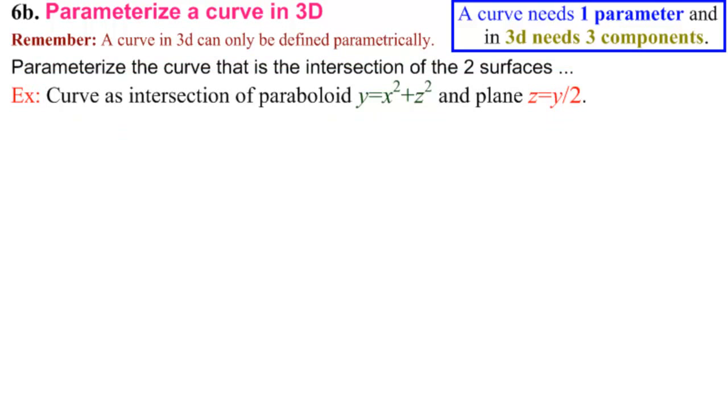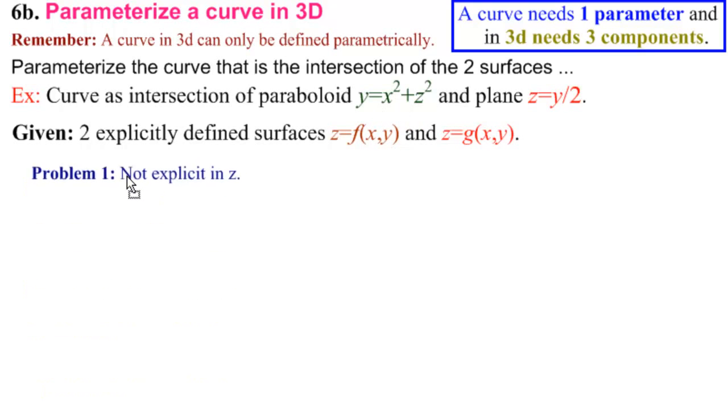And remember that our first thing was to look for two explicitly defined surfaces, z equal to f of x, y, and z equal to g of x, y. Problem number one, we cannot solve this explicitly for z. Let's write that as our problem. Our problem is that we don't have explicit surfaces in z.